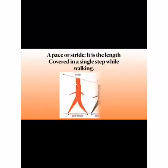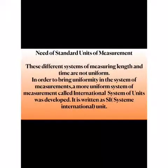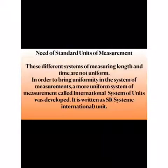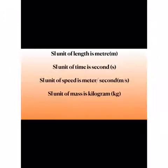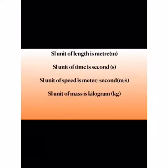A pace is the length covered in a single step while walking. These units were used in ancient times but are not standard units of measurement because they are not uniform — they change from person to person. In order to bring uniformity, an international system of units was developed, written as SI units. The SI unit of length is the meter, of time is the second, of speed is meter per second, and of mass is the kilogram.